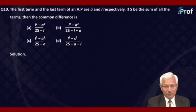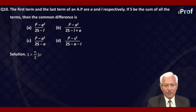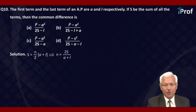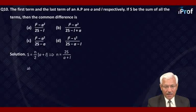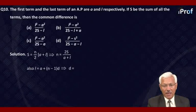We are given A the first term, L the last term. If N is the number of terms, then S equals N over 2 into A plus L, which gives us N equal to 2S upon A plus L. Also, L is the last term, so L equals A plus (N minus 1) times D, which gives us D equal to L minus A divided by N minus 1.